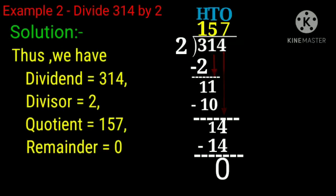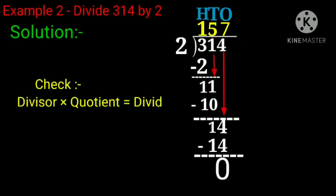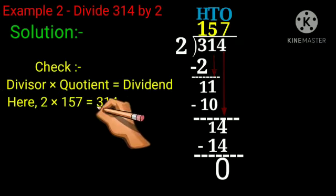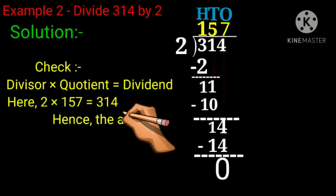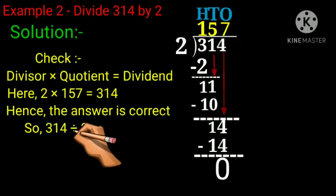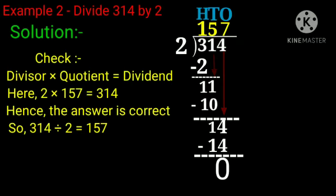Now check your answer. Divisor into quotient equals dividend. Here, 2 multiplied by 157 equals 314. Hence the answer is correct. So, 314 divided by 2 equals 157.